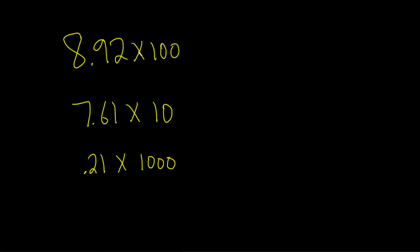In this first example, we have two zeros. So you just take this decimal and move it to the right two times: one, two, boom. You get 892. Since there are two zeros, you move it to the right twice.